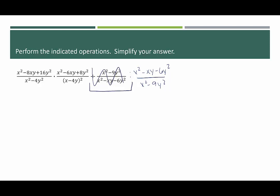Starting with the top left numerator, I have x squared minus 8xy plus 16y squared. The target product is 16 and the target sum is negative 8, so it's going to be x minus 4y times x minus 4y — effectively x minus 4y squared — but I'm going to write them separately so that if one happens to be a common factor with anything in the denominator, it's easier to simplify. x squared minus 4y squared is a difference of squares, factoring into root minus root times root plus root.